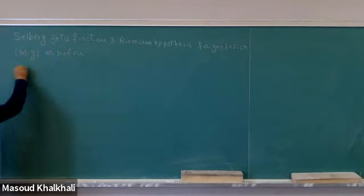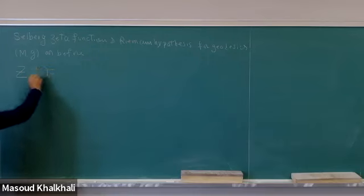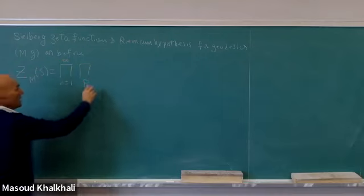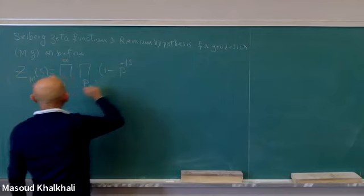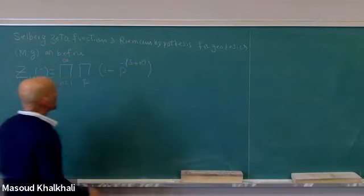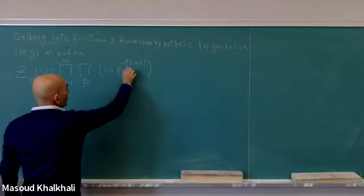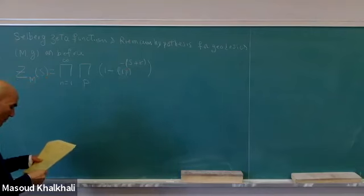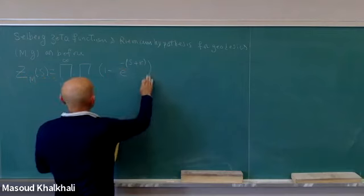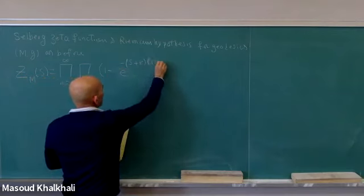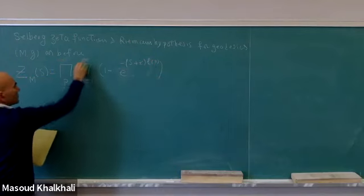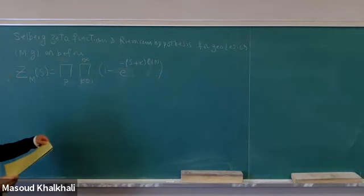The Selberg zeta function is defined as: Z_M(s) = ∏_{k=0}^∞ ∏_P (1 − e^(−(s+k)·L(P))), where P ranges over the set of prime geodesics. Compare this with the Euler product formula for the Riemann zeta function: ζ(s) = ∏_p (1 − p^(−s))^(−1). Here we are not inverting, but otherwise the similarity is clear. Here P belongs to the set of prime geodesics, so this is really an infinite product over all closed geodesics up to free homotopy, taking all powers.